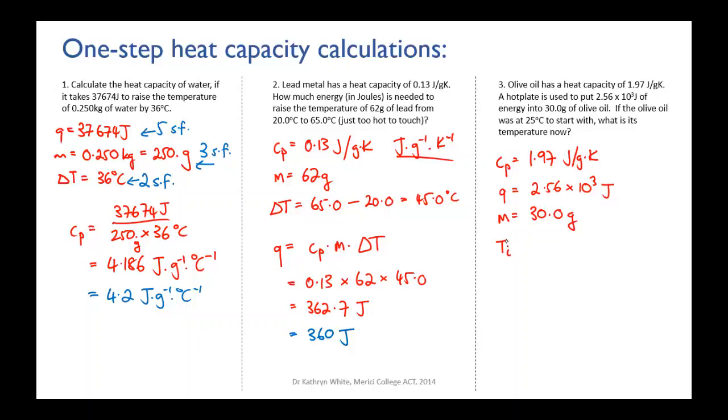We're told that the initial temperature, we'll call that Ti, is 25 degrees Celsius. And we want to know what is its final temperature. So to work out the final temperature, we're going to need to know the change in temperature. So that's what we're figuring out. So we're going to need to rearrange that equation again. Once more, try it for yourself and make sure you have tried it for yourself. You should end up with delta T equals Q over M times heat capacity. When we plug that in, Q is 2.56 times 10 to the third. Our mass is exactly 30 grams. And our heat capacity is 1.97. When you evaluate that, you will get 43.3 degrees Celsius to three significant figures. So we now know our change in temperature.